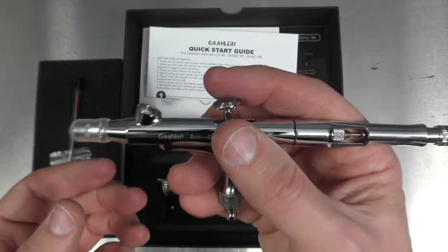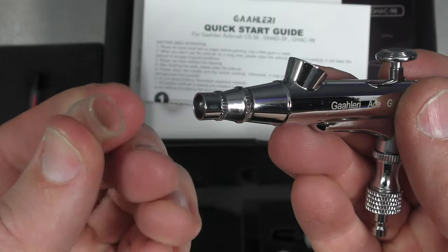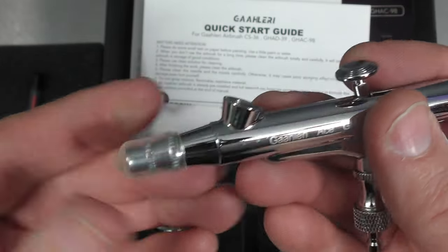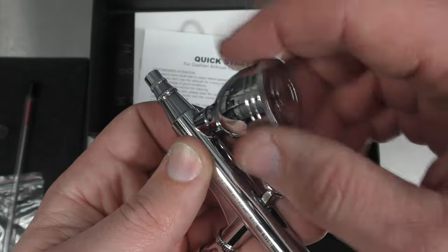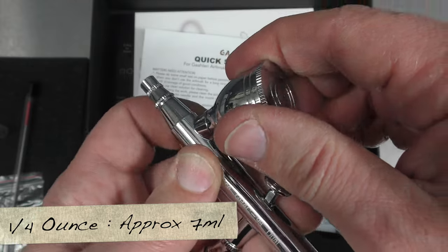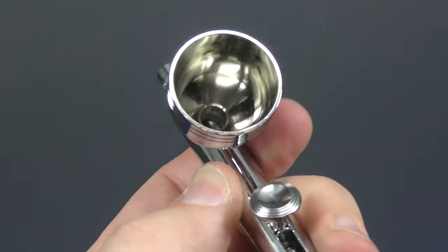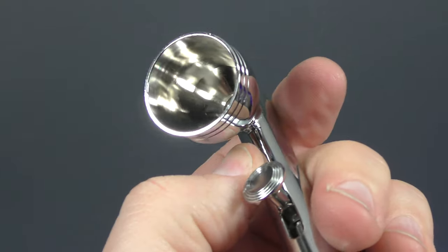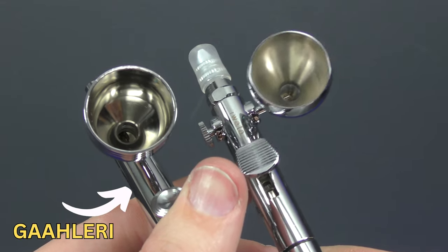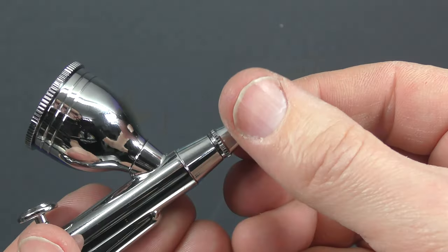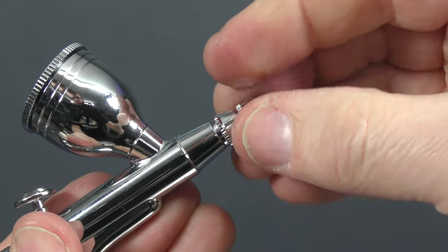The airbrush itself, nice weight to it. Feels a bit heavier than my Iwata Eclipse. I'm a big fan of these rubber caps. Always good to just pop them back on when you finish. So it's good that it comes with that. It's the colour cup. Screw that on. Now this is a quarter ounce colour cup so just over 7 mil. Another cool feature is that the colour cup on the inside is heavily polished which should make it a bit easier to clean. You can really see the difference between the Gallery brush versus my Eclipse Takumi.